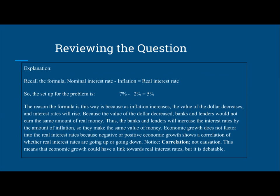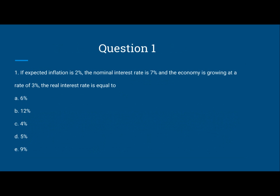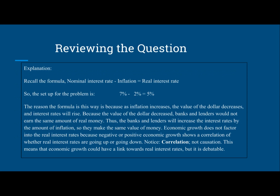Remember, the formula to find the real interest rate is nominal interest rate minus inflation. So we set up the problem like this. From the problem, the nominal interest rate is 7% and the expected inflation is 2%. So we set it up as 7% minus 2%, which equals a real interest rate of 5%.